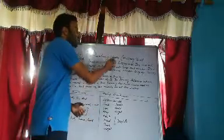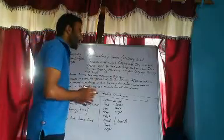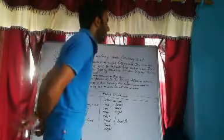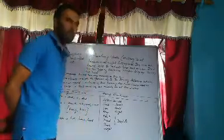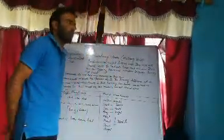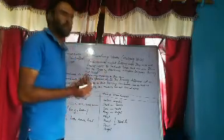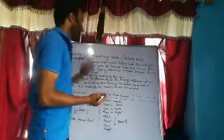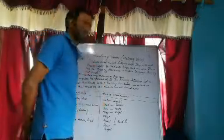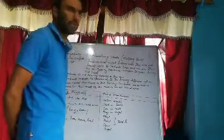Auxiliary verbs are just helping verbs. They work with lexical verbs to indicate tenses and numbers. Lexical verbs are all verbs except auxiliary verbs, which include action verbs and state verbs — for example, 'work' and 'play'.